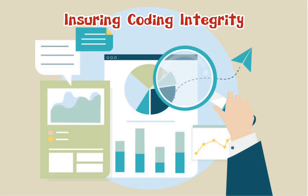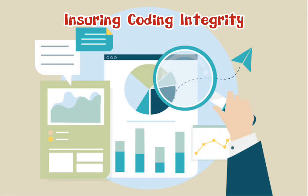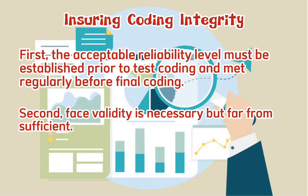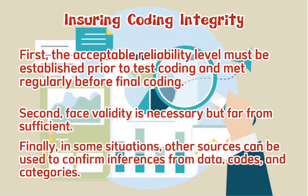Ensuring coding integrity: during coding, three techniques help ensure the integrity of the work. First, the acceptable reliability level must be established prior to test coding and met regularly before final coding. Second, face validity — the correspondence between investigators' definitions of concepts and their definitions of the category that measured them — is necessary but far from sufficient. Finally, in some situations, other sources can be used to confirm inferences from data codes and categories.